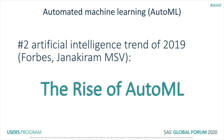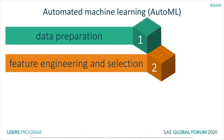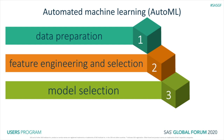So what is automated machine learning? It involves, as you would guess, automating the tasks that are required for building a predictive model based on machine learning algorithms. These tasks include data cleansing and preprocessing, feature engineering and selection, model selection, and hyperparameter tuning.